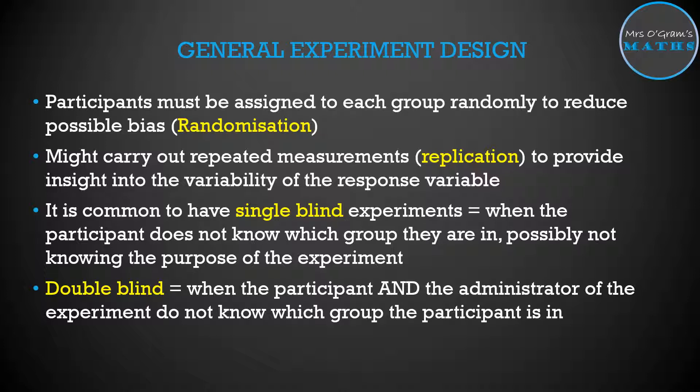Double blind is when the person running the experiment also doesn't know which thing they're administering. If you're doing it on medication, for example, you might have a control group that's receiving a dummy pill, they're getting a tablet that actually has nothing in it, and then another group that's receiving the actual treatment. If it's double blind, then the person administering those tablets to the groups also won't know which is which, so they can't influence the outcomes of that experiment. They can't be tempted to round numbers up for the treatment group and round numbers down for the control group, that kind of thing.